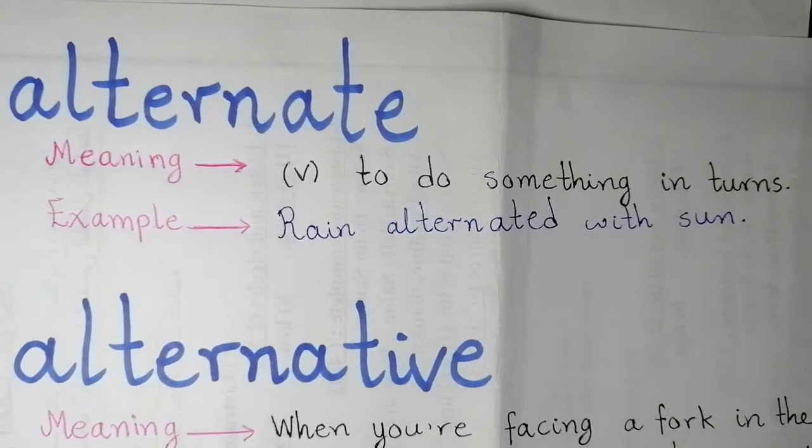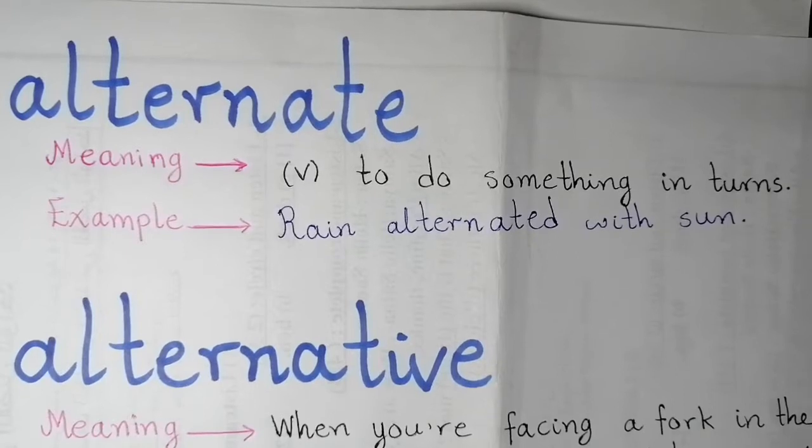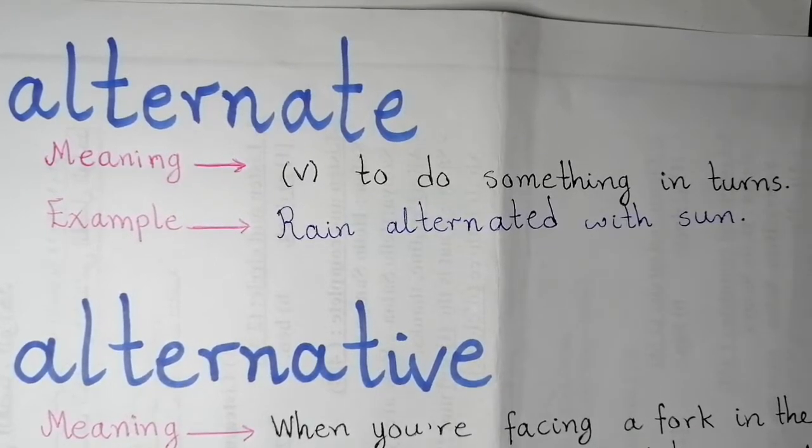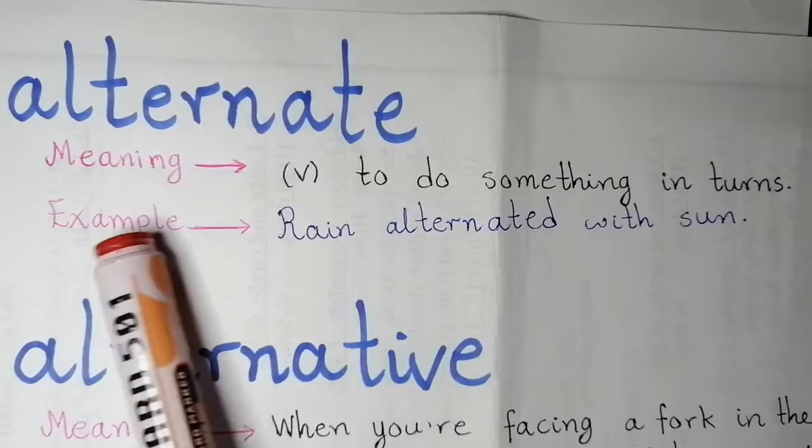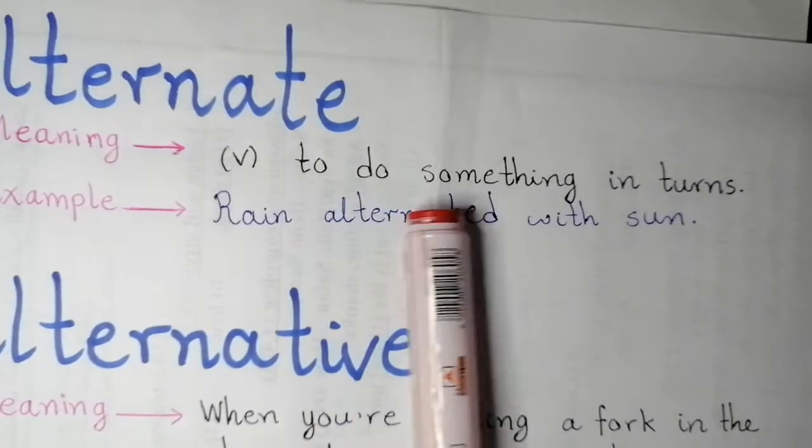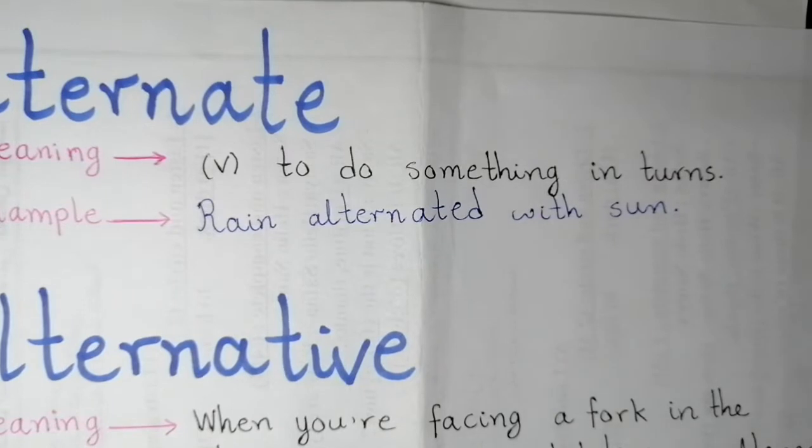Hello everyone, welcome to my channel Improve Your English. In today's lesson, we are going to take two different confused words. Alternate means to do something in turns or to be done in turns.